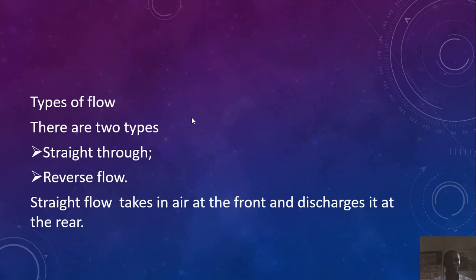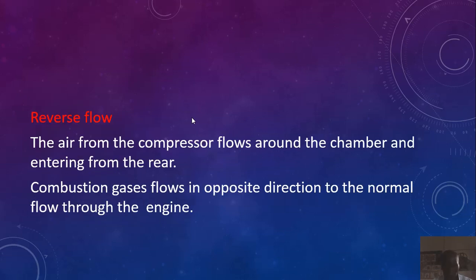Types of flow — there are two types: straight through and reverse flow. Straight flow takes in air at the front and discharges it at the rear or exit. Reverse flow — air from the compressor flows around the chamber and enters from the rear. Combustion gases flow in the opposite direction to the normal flow through the engine.